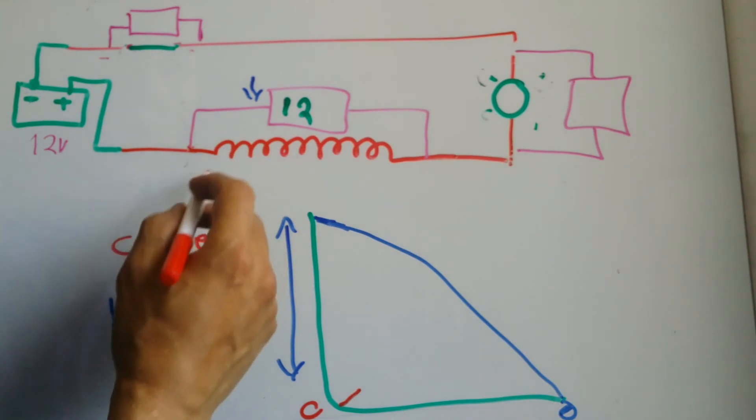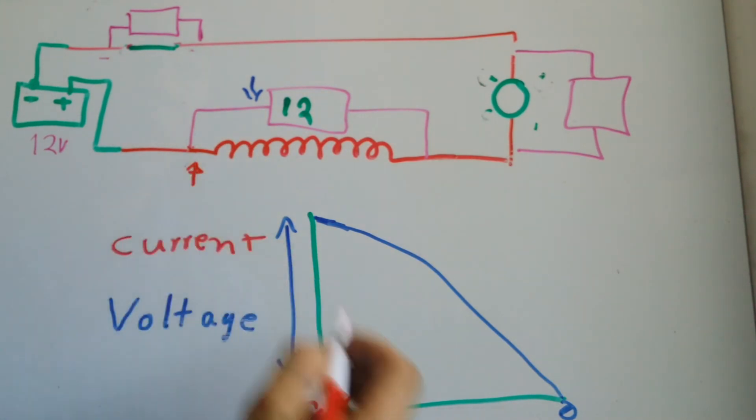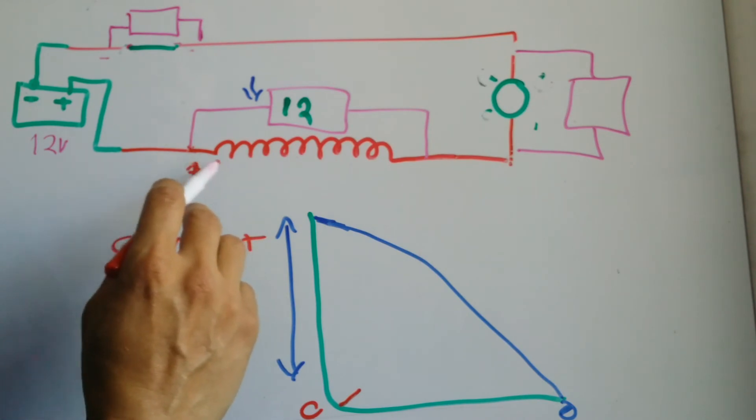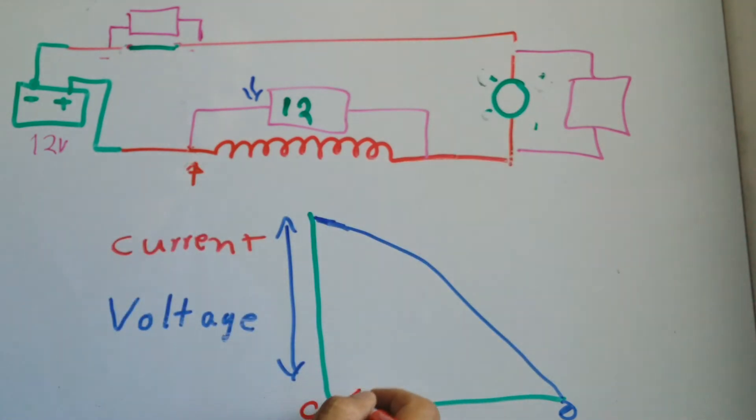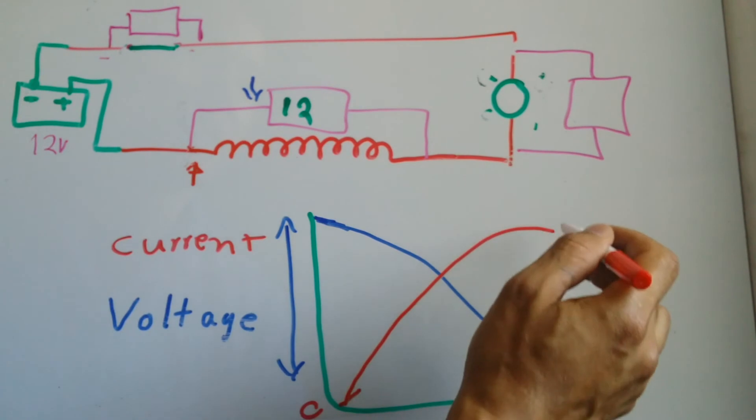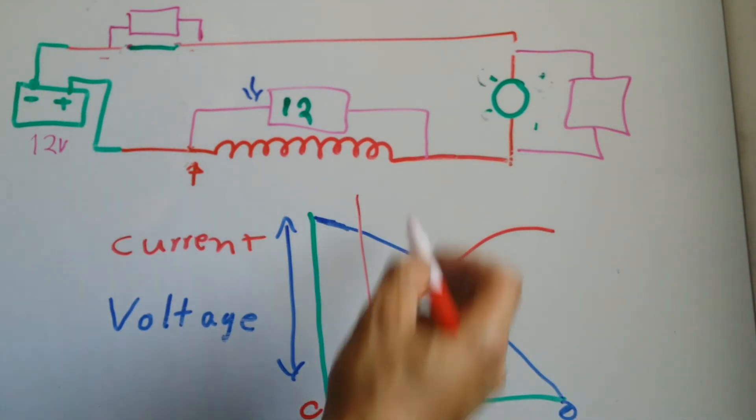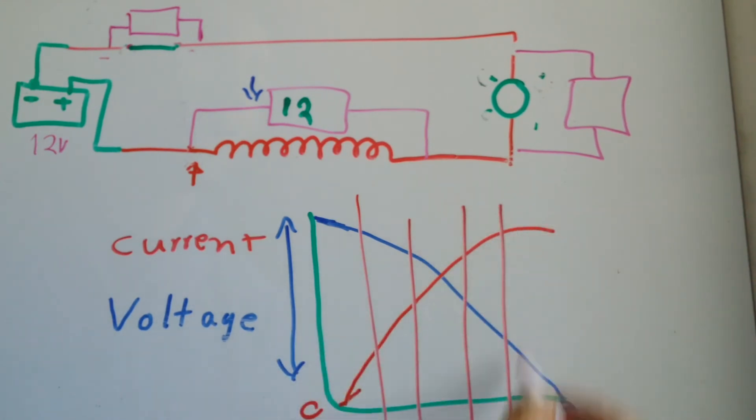The current through the inductor is going to start to increase, and since this is a series circuit, whatever current that we get through the inductor is going to get through the light. You are going to see it to a maximum point. This is going to happen in what is called 5 time constants.